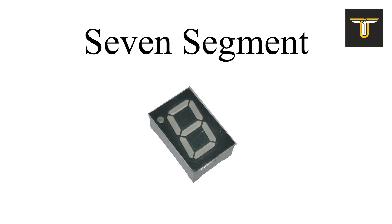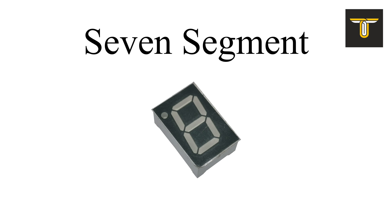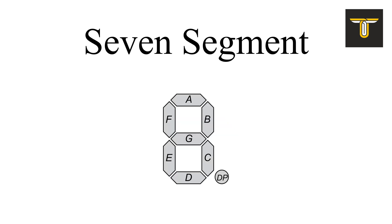A 7-segment display consists of 7 LEDs arranged in a rectangular manner that forms the shape of an 8. Each LED is called one segment. It is used to display decimal numbers from 0 to 9. We can generate any number by enabling and disabling different segments. The symbol for a 7-segment display is this.